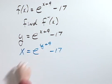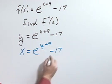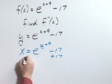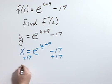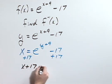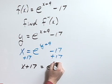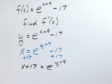Now solve for the new y. To do that, let's add 17 to both sides. So x plus 17 equals e to the y plus 9.